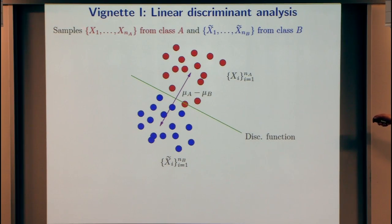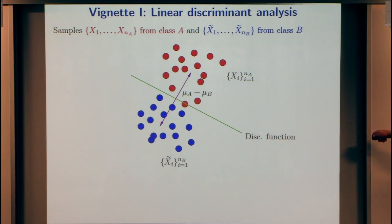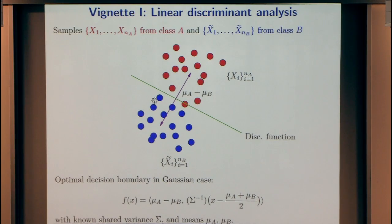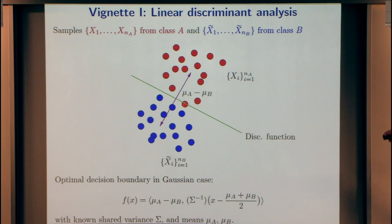Suppose I give you two data sets — one set of samples X from class A, and another set X-tilde from class B. These are labeled samples; you know which is from A and which is from B. You'd like to find a discriminant function that separates these, and use it to classify a future unlabeled sample as belonging to A or B. In the low-dimensional setting, this is well understood. If you model these as Gaussian clusters with shared covariance sigma and mean vectors mu_A and mu_B, then the best decision boundary is essentially linear — you project onto the error vector between the two means and use that to discriminate.